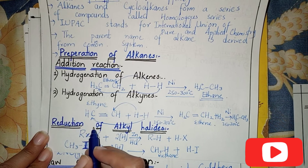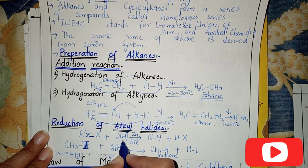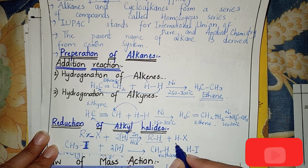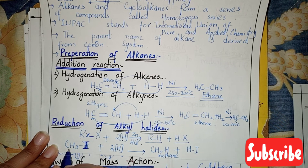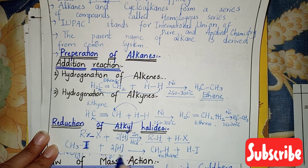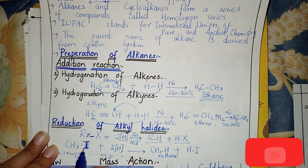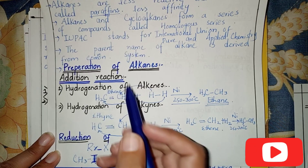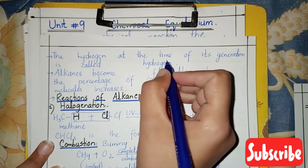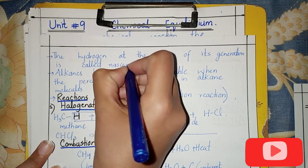Reduction of alkyl halides: an alkyl halide combined with nascent hydrogen will form an alkane and a hydrogen halide. For example, methyl iodide in the presence of nascent hydrogen gives us methane, forming hydrogen iodide as the iodine is replaced. The hydrogen at the time of its generation is called nascent hydrogen.